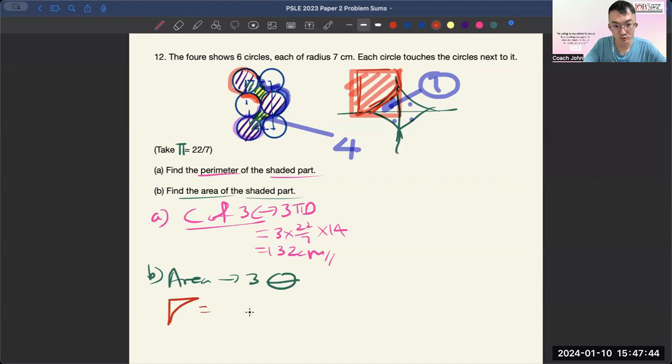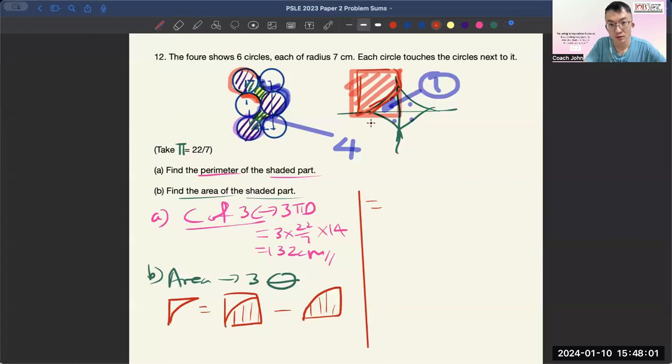It equals a square minus a quadrant, which is 7 times 7 minus a quarter times π r squared. You can do cancellation to make it easy. It's 49 minus 38.5, which equals 10.5 cm squared.